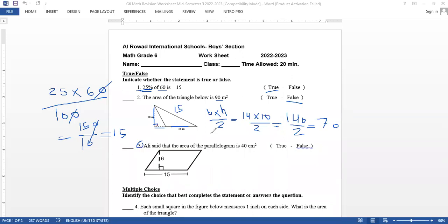Ali said that the area of the parallelogram is 40 centimeters squared. So area of the parallelogram is base times height, without dividing by 2. Remember this. The base is 15 and the height is 6, and they are perpendicular. 6 multiply 15 equals 90. But he put the answer is 40, so the answer is false.